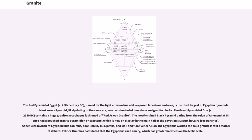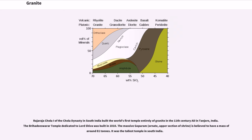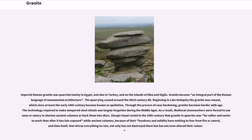How the Egyptians worked the solid granite is still a matter of debate. Patrick Hunt has postulated that the Egyptians used emery, which has greater hardness on the Mohs scale. Rajarajachola I of the Chola dynasty in South India built the world's first temple entirely of granite in the 11th century AD in Thanjavur, India. The Brihadeeswarar temple dedicated to Lord Shiva was built in 1010. The massive Gopuram, the ornate upper section of the shrine, is believed to have a mass of around 81 tons. It was the tallest temple in South India. The imperial Roman granite was quarried mainly in Egypt, and also in Turkey, and on the islands of Elba and Giglio. Granite became an integral part of the Roman language of monumental architecture. The quarrying ceased around the 3rd century AD. Beginning in late antiquity the granite was reused, which since at least the early 16th century became known as spoliation.